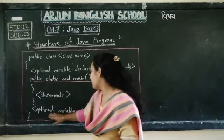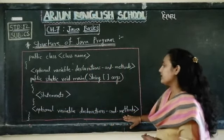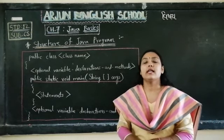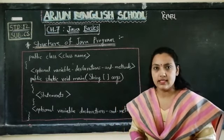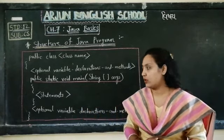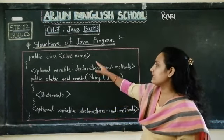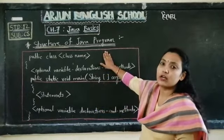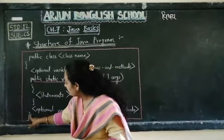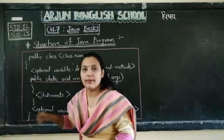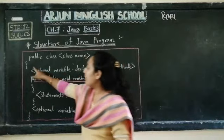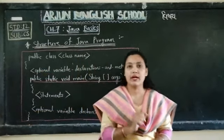After finishing that, close the curly bracket — that is the opening and closing of curly braces. After that, optional variable declarations and methods — once again we can declare certain variables and methods. Finally, the closing curly bracket. Don't forget to make this pair of opening and closing brackets perfectly.